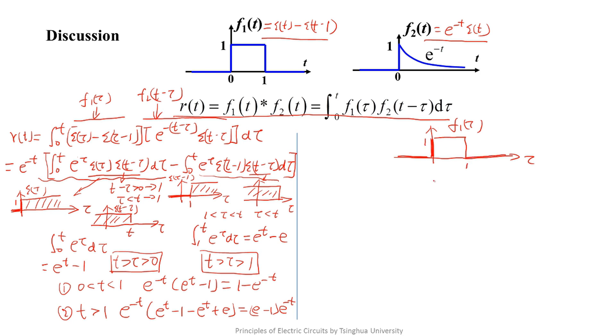Then we draw the graph of f2(t minus tau). Firstly, the simplest condition is when t equals zero. The function equals f2(minus tau) and its graph is like this.